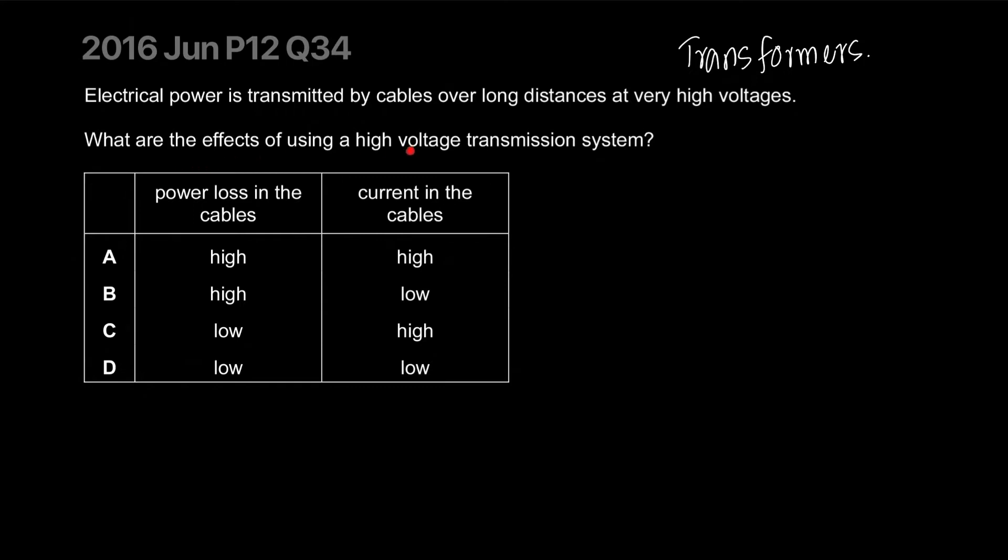What are the effects of using high voltage in a transmission system? The reason you use it in a transmission system is for power delivery from the station to power lines which take it to cities and towns. The electricity needs to travel in wires over really long distances.